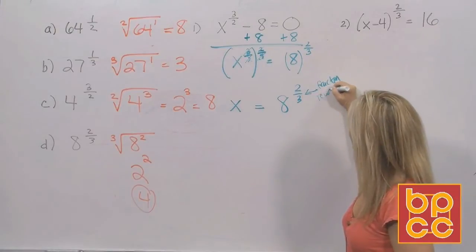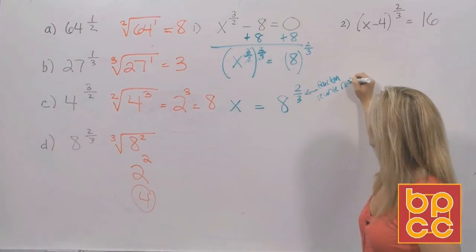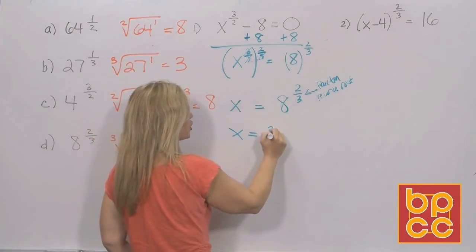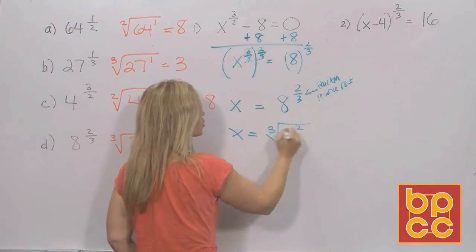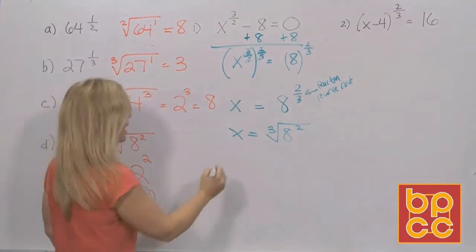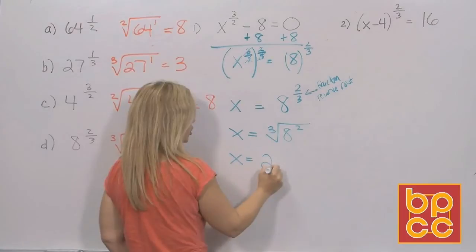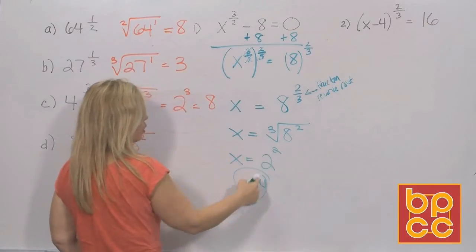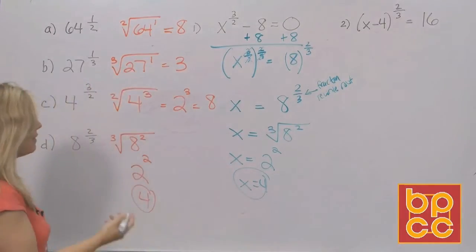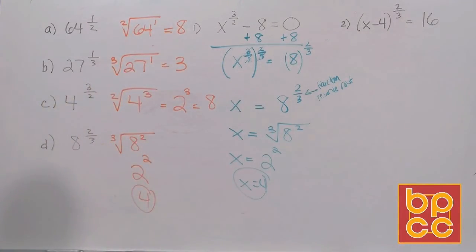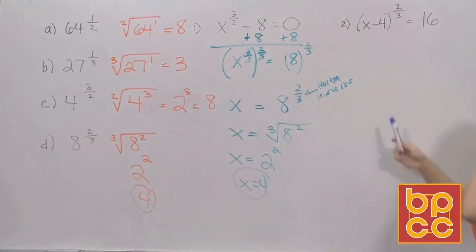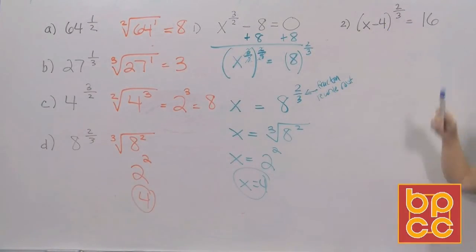Rewrite 8 to the two-thirds as a root. The denominator is 3, so it's the cube root of 8 squared. Do the root first: the cube root of 8 is 2, and 2 squared is 4. Cube roots only have one answer, so x equals 4. You can verify by checking it in the original equation — it balances. Now let's try another one: x minus 4 to the two-thirds equals 16.